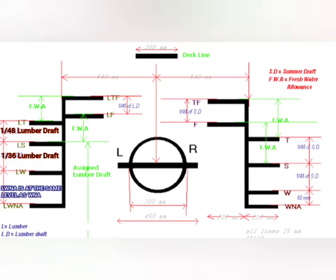Now for the timber load line: it starts with the assigned lumber summer draft. From that point, the lumber winter draft is 1/36 of the summer draft, and to the tropical it is the normal 1/48 of the lumber draft. The lumber Winter North Atlantic mark is the same as the normal load line Winter North Atlantic mark. As with normal draft marks, the reading increases as we go above. So 36 is the lower number and 48 is the upper — use this as a trick to remember that 1/36 is to the winter and 1/48 is to the tropical.